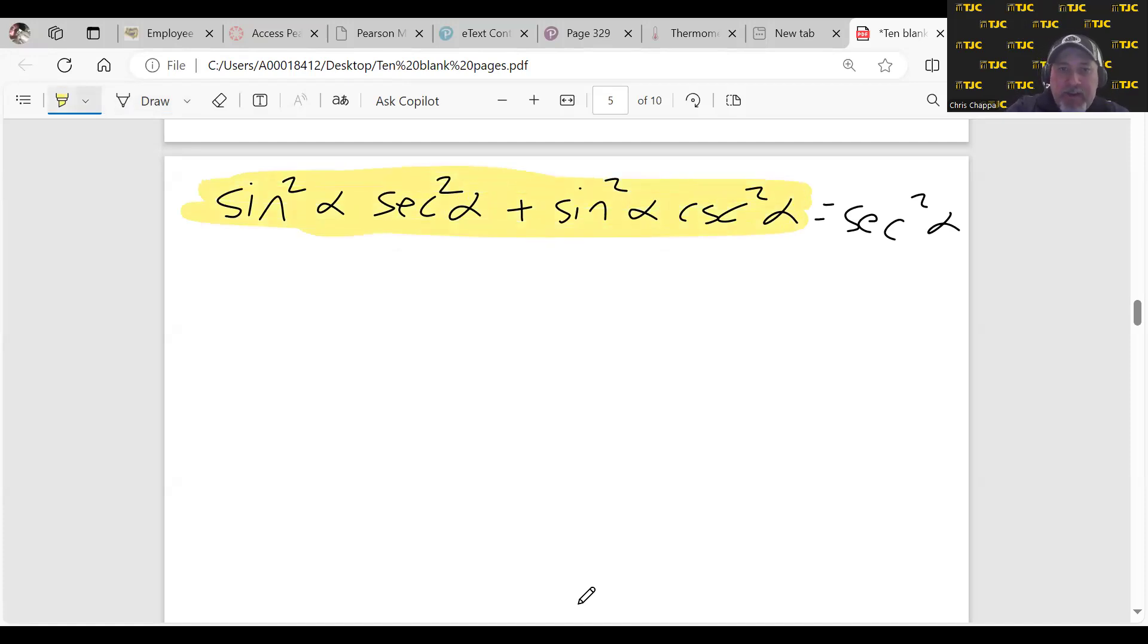Now remember, when you're manipulating a trigonometric expression, you have two options. Option number one is a trigonometric move. Option number two is an algebraic move. Which one do you think we should do here?